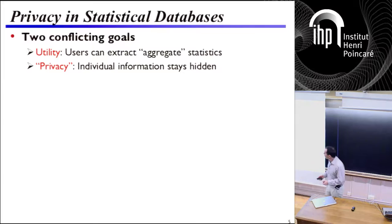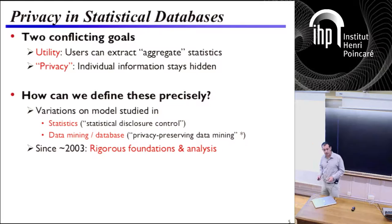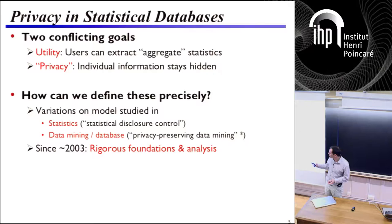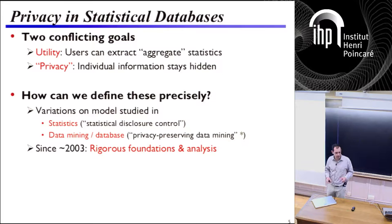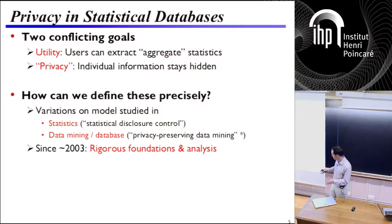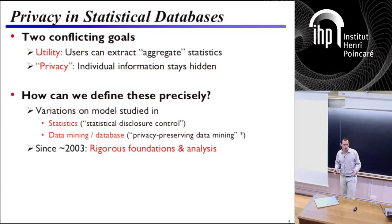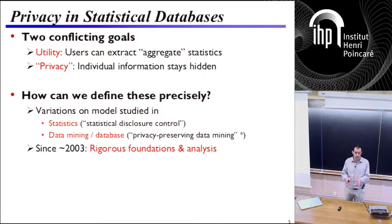Maybe the first question we should ask is how can we even pin down this question precisely? Utility is what most of us are used to thinking about. If you ever take a class in statistics or machine learning, you spend a lot of time thinking about what exactly you're trying to get out of a data set. Privacy is less clear exactly what we should be aiming for. Variations on this model have been studied since the 1960s in statistics and in the data mining and database literature. In the last decade plus, there's also been a lot of work in theoretical computer science, which has really sought to place this area on much more rigorous foundations.